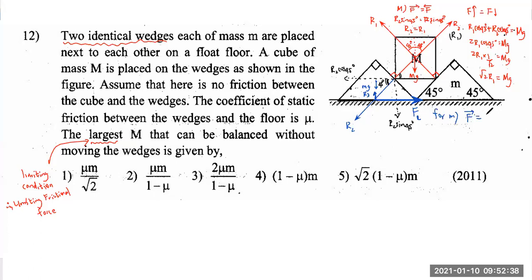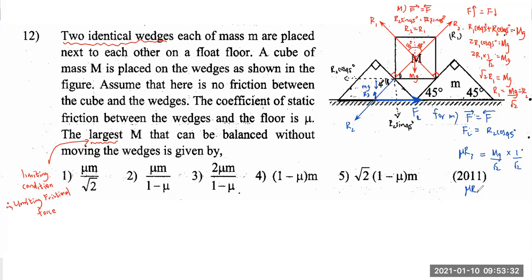Horizontal equilibrium of the wedge: FL = R2 cos 45°. Since FL = μR3, we get μR3 = R2 cos 45°. Substituting R2 = Mg/√2 gives μR3 = (Mg/√2)(1/√2) = Mg/2. Therefore R3 = Mg/(2μ).